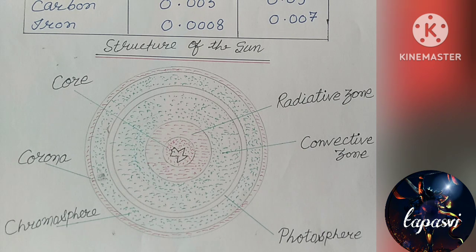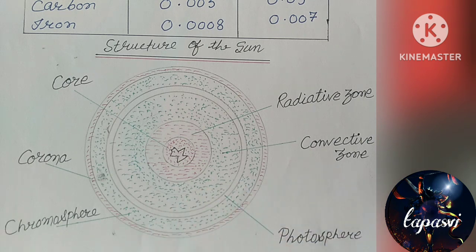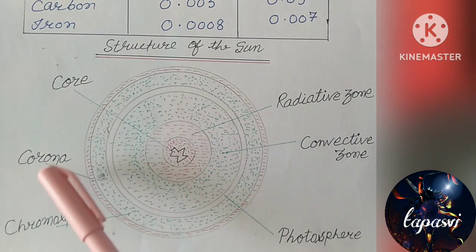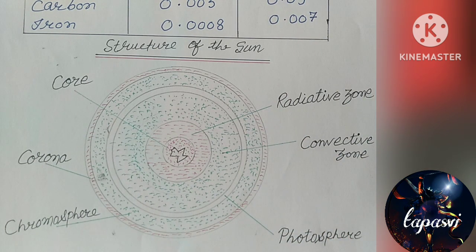Between the chromosphere and corona, spectroscopic investigations have identified a distinct, very narrow boundary zone known as the transition region. Look at the picture. There are three inner zones and three outer zones.